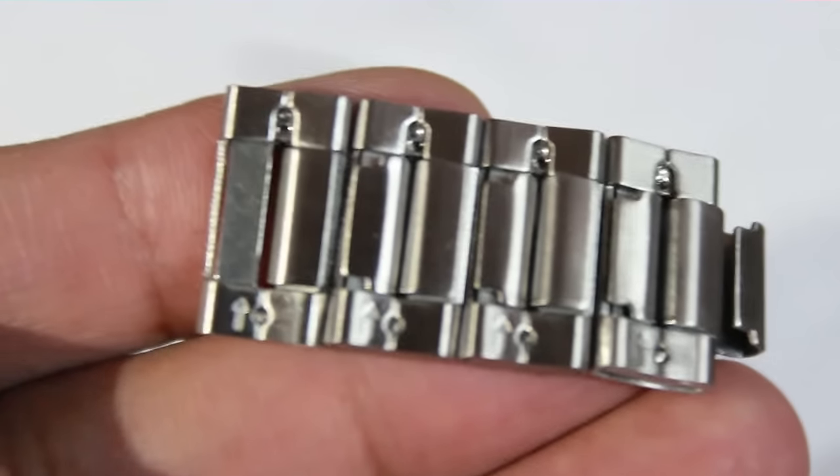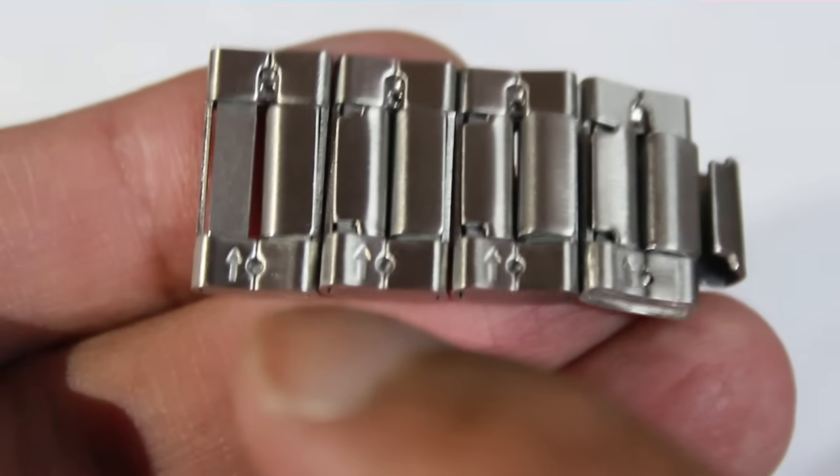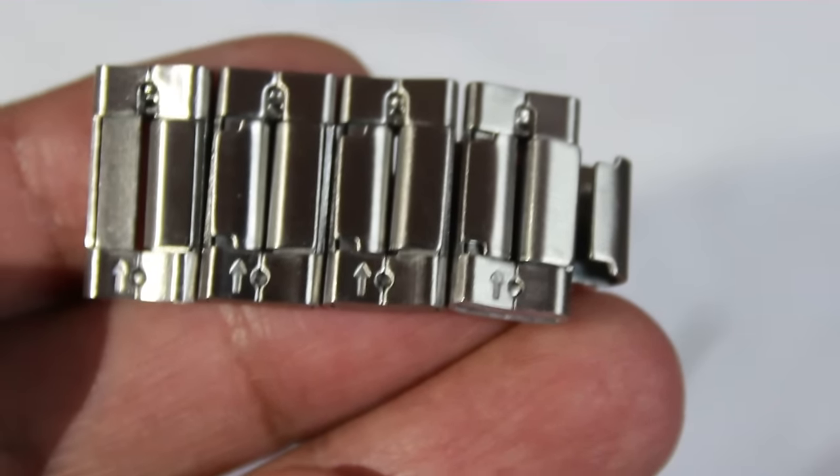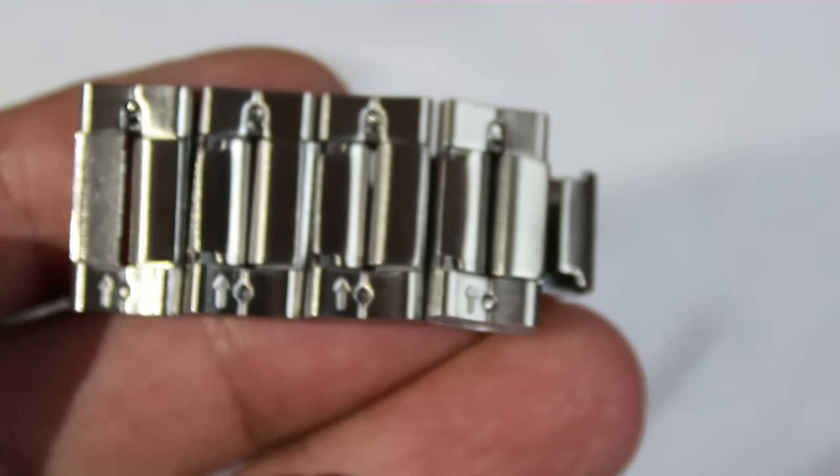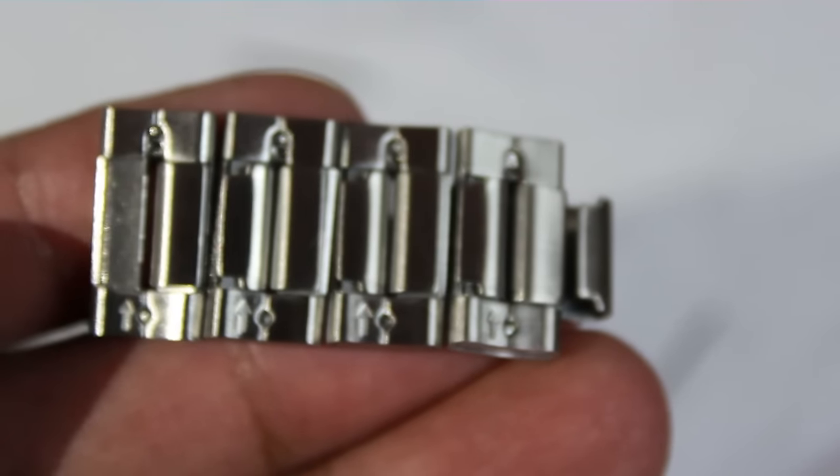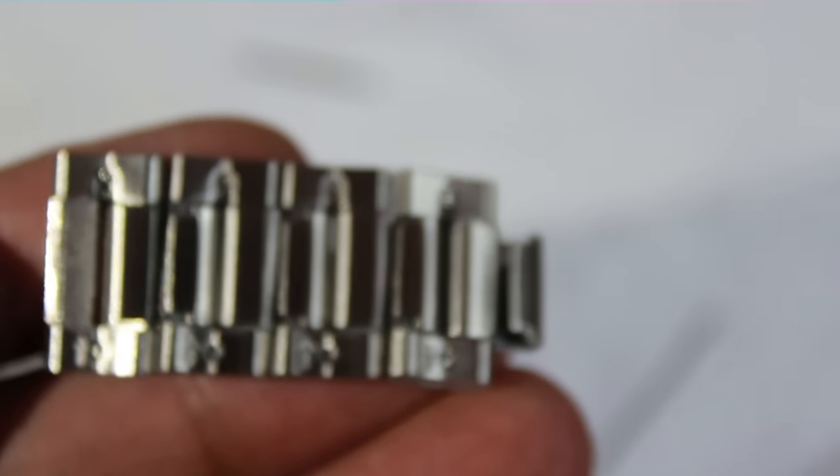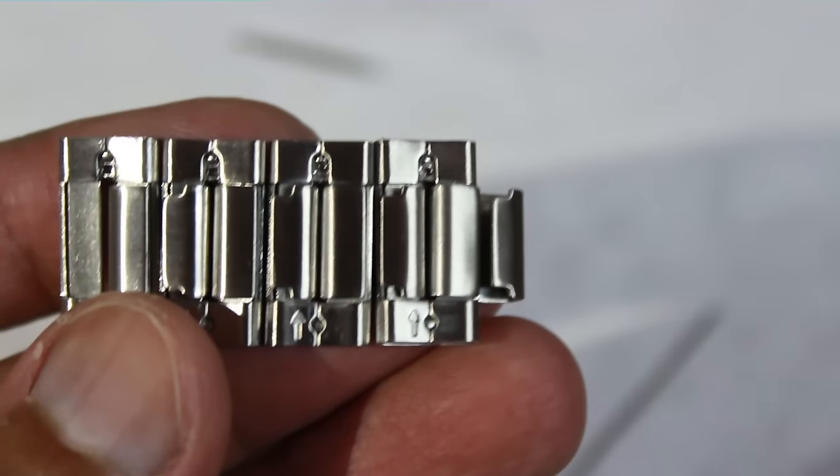As you can see there's three arrows there, one, two, three. It's pointing upward which means you have to push the locking pin to the direction where the arrow is pointing at. You want to insert this Phillips screwdriver in this space right there, this tiny space right there.